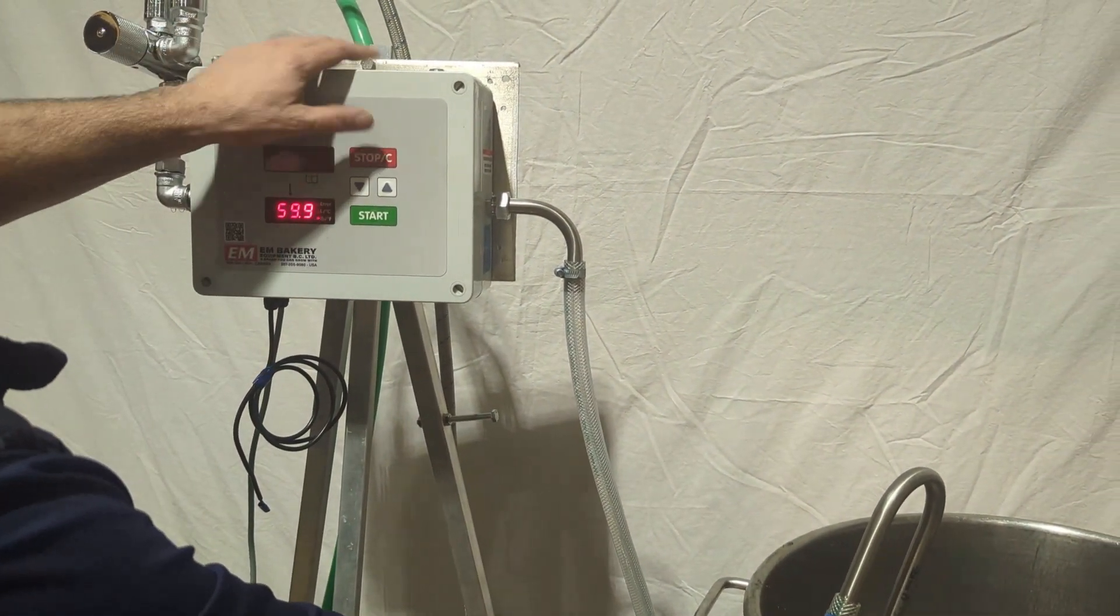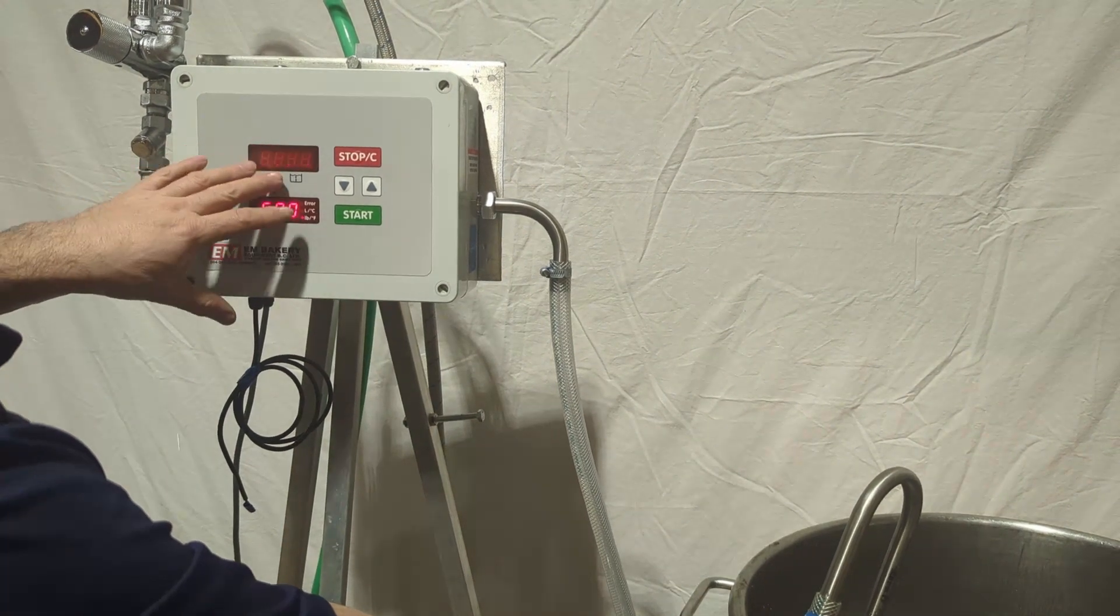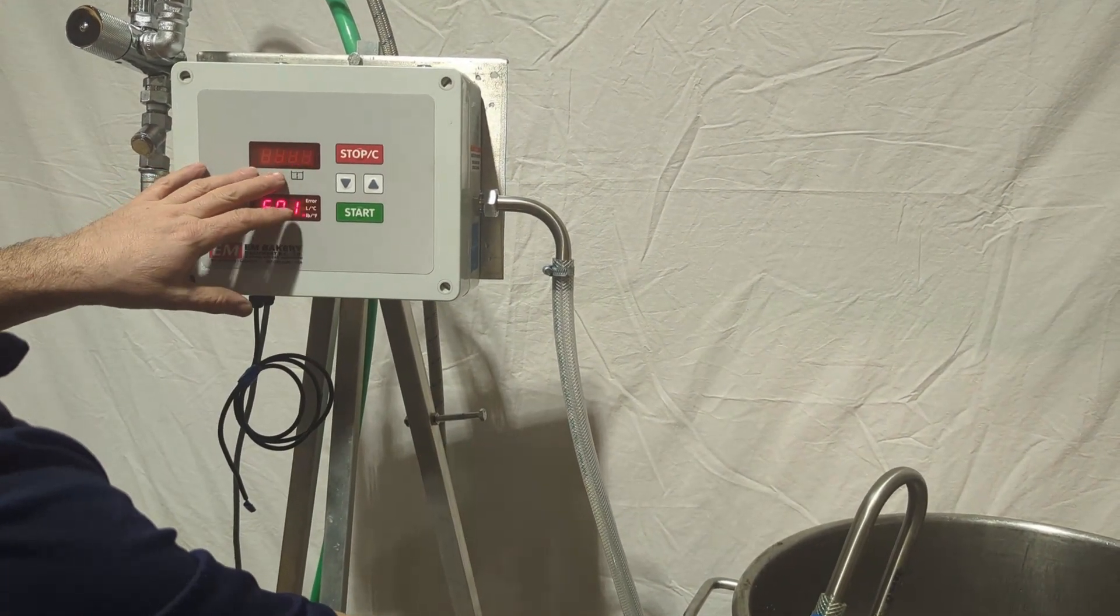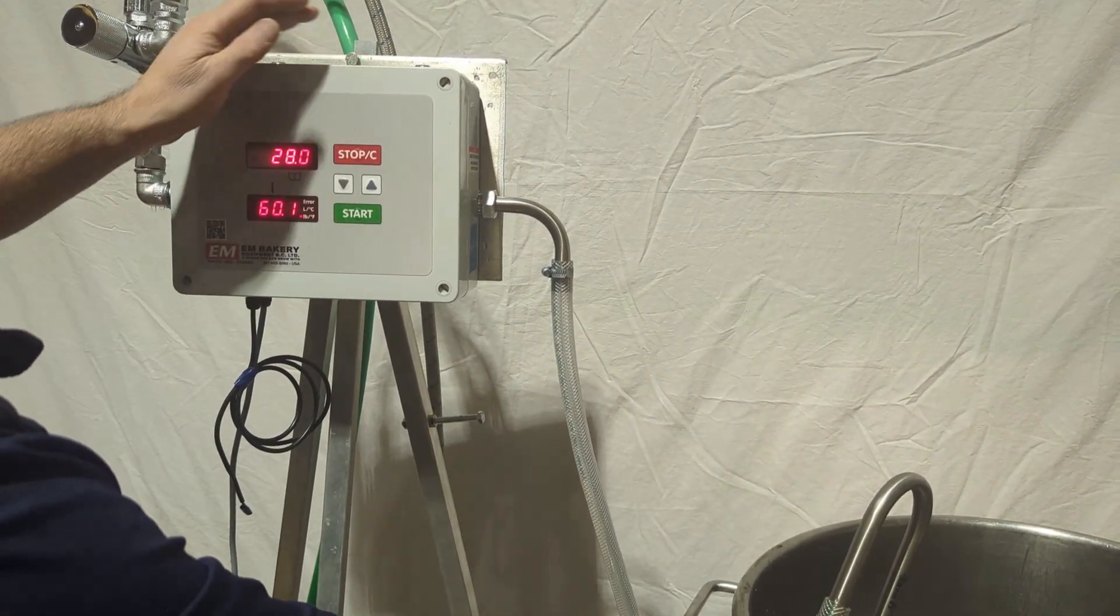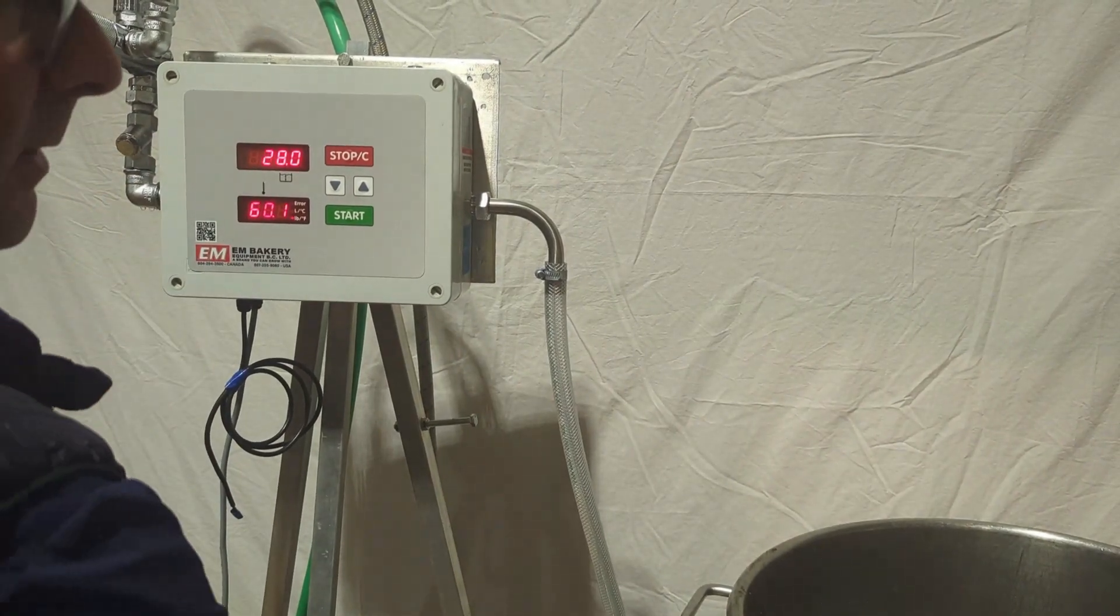If you hit stop once, the water meter will pause and let you know what you've dispensed. If you hit stop a second time, it resets right back to its original setting.